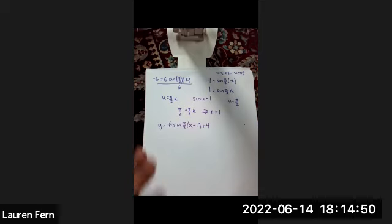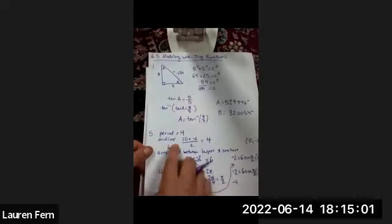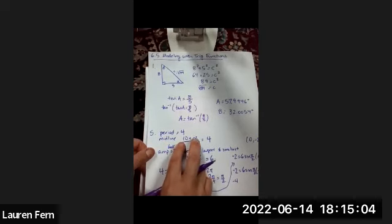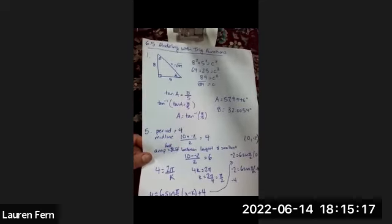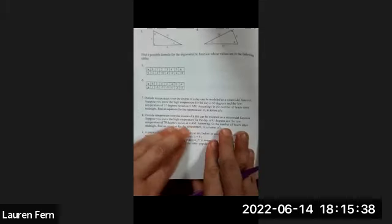A lot went on there. The period gave us the coefficient in front of x; I found that just by looking at the table. The midline is halfway between the largest and smallest values. The amplitude is half the difference between largest and smallest. Then I took an ordered pair and plugged it in to determine the horizontal shift.